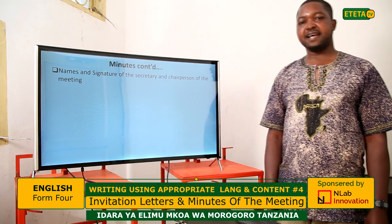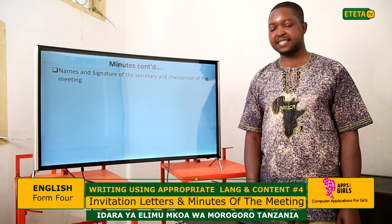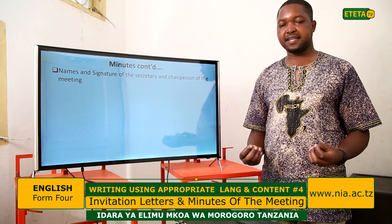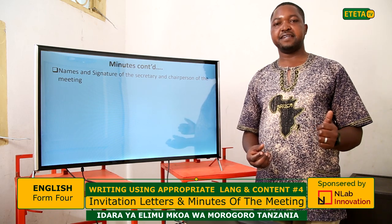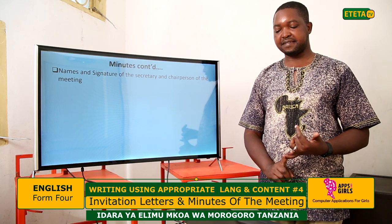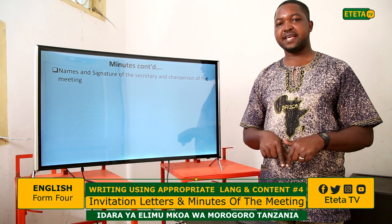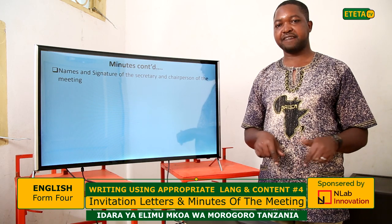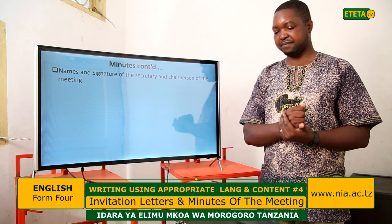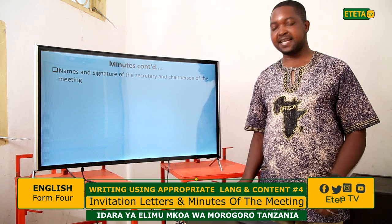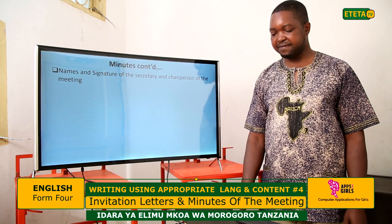Another important component is the names and signatures of the secretary and chairperson of the meeting. In order to make the minutes official, you need the signature of the chairperson as well as the full name and signature of the secretary — they must appear at the bottom of the minutes. In some institutions, they also stamp the document to show it is authenticated. The names and signatures of the secretary and chairperson are vital — they should be there.